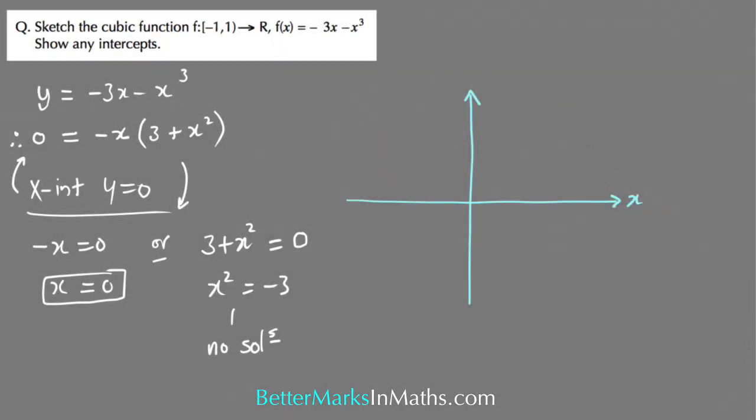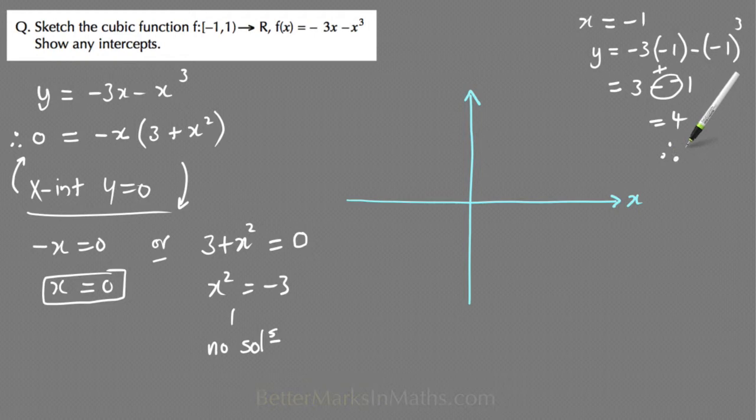The other thing I want to look at before I sketch the graph is this domain up here. So the left-hand x value is minus 1. If I let x equal minus 1, then y, subbing that into this equation, becomes minus 3 times minus 1 minus minus 1 cubed, and that equals positive 3 minus minus 1, that becomes a positive, and then 3 plus 1 equals 4. So the point minus 1 comma 4.